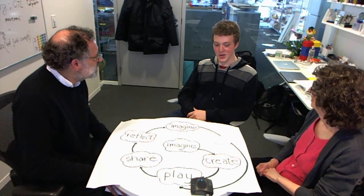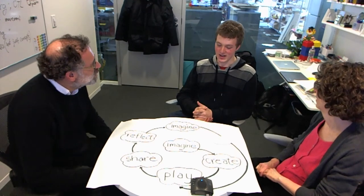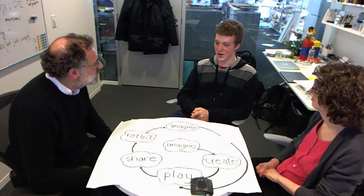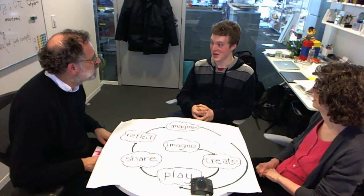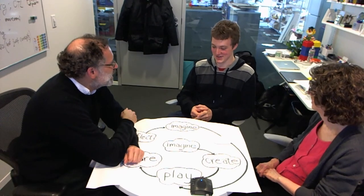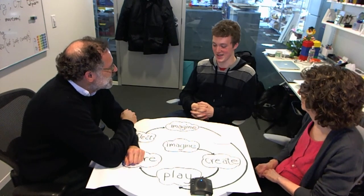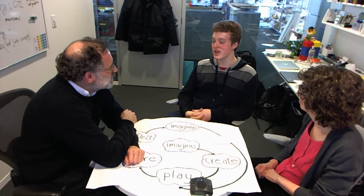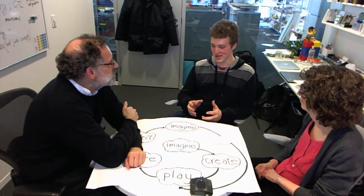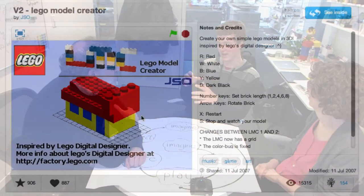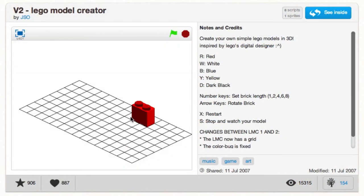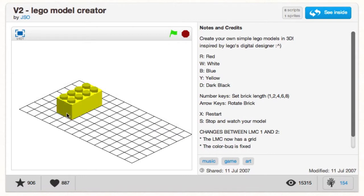Around that time, Lego made an application called Lego Digital Designer, which was exciting because I could build things with blocks I didn't have — and physics didn't apply, so you could build structures that didn't exist. I wondered if there was a way to do this for small models in Scratch. I ended up drawing blocks in a certain grid so that when you place them on top of each other, it looks like you're building a 3D model.